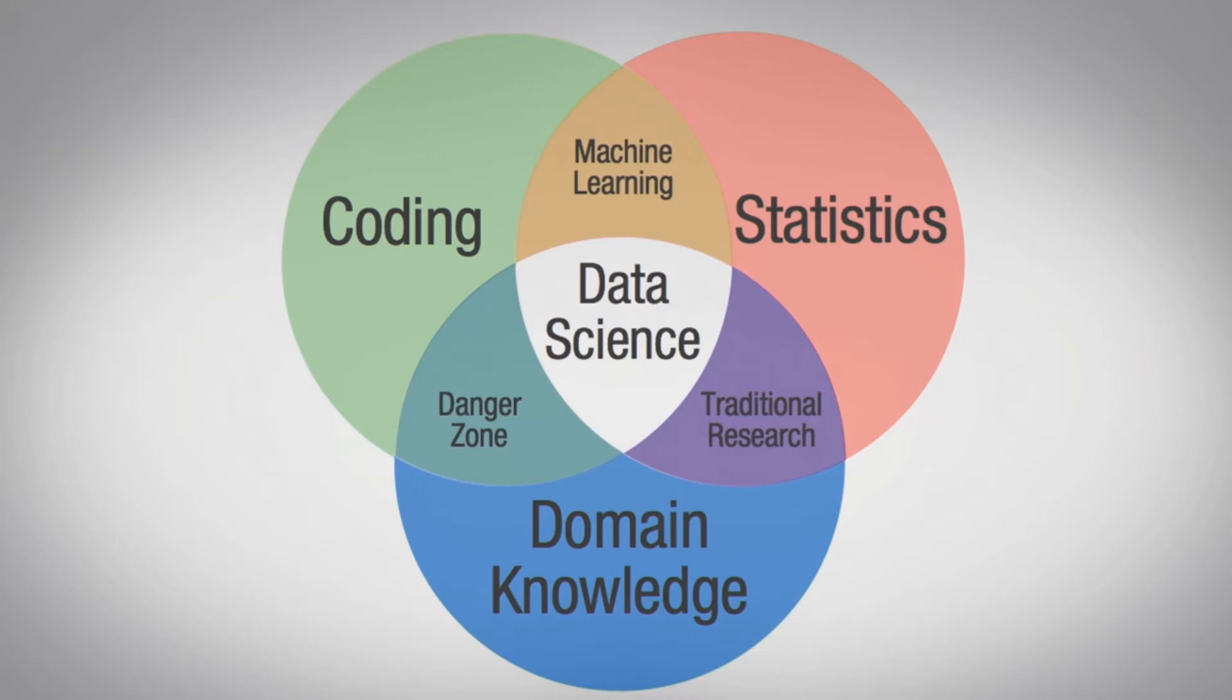The first is statistics, on the top right. The second, on the bottom, is domain knowledge that you actually know, for instance, about management or advertising. And the one on the top left is coding or being able to program computers. He's arguing that to get data science, a person needs to be able to do all three of these. We're going to talk about each of these facets one at a time and in combination with each other.